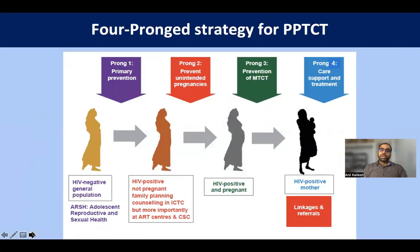The government follows a four-pronged strategy for prevention of parent-to-child transmission. Prong 1 targets HIV-negative general population through adolescent sexual and reproductive health programs. Prong 2 targets HIV-positive non-pregnant women with family planning counseling at ICTC, ART centers, and community service centers. Prong 3 concentrates on HIV-positive pregnant women, focusing on preventing maternal-to-child transmission. Prong 4 focuses on HIV-positive mothers with a lactating baby, providing care and support and linking them to ICTC.